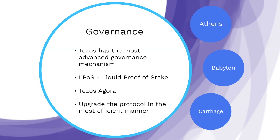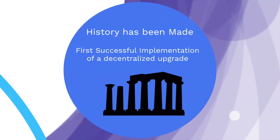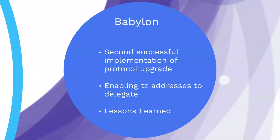So far Tezos has gone through three proposals. The first is Athens — our first successful implementation of a decentralized upgrade using the Tezos governance mechanism. One of its key features was reducing the staking requirement from 10,000 Tezos to 8,000, so you only need 8,000 Tezos to be your own baker, run your own node, and validate the network. The second proposal was Babylon — the second successful protocol upgrade. It was a very major upgrade.